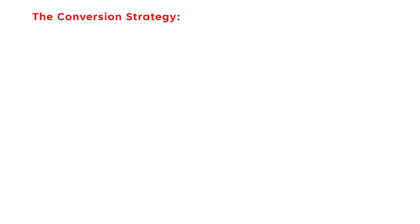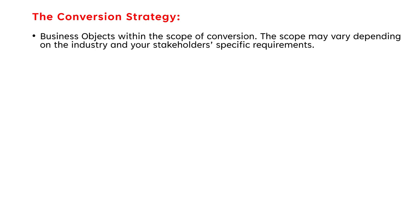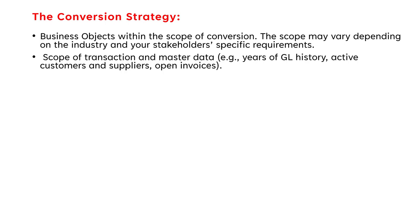Let's start with the conversion strategy. Create a conversion strategy during the early stages of the implementation. This will enable you to obtain stakeholder buy-in and plan the schedule, tasks, efforts, and resources needed. You should also update your conversion strategy very often, as the scope of the conversion may vary depending on the industry and your stakeholders' specific requirements — it is different from organization to organization.